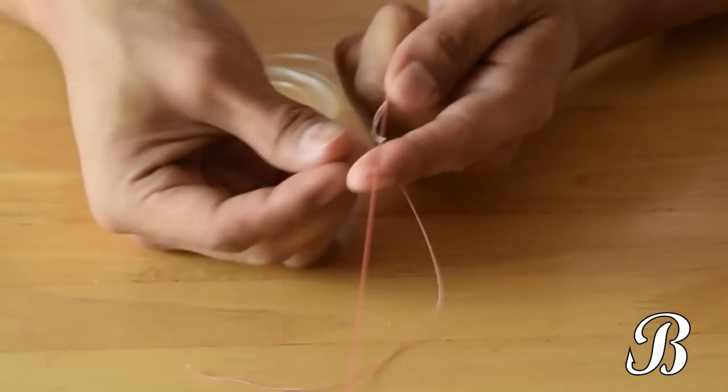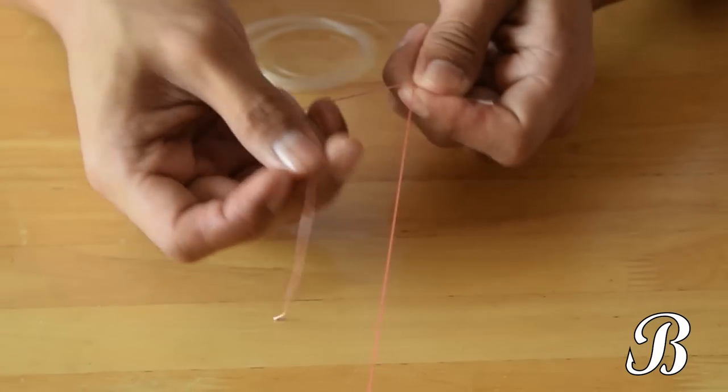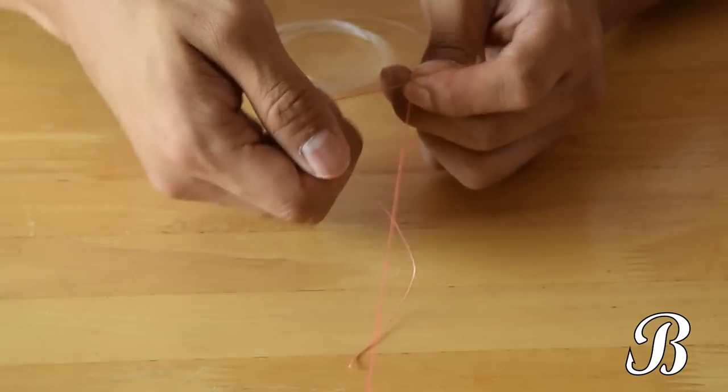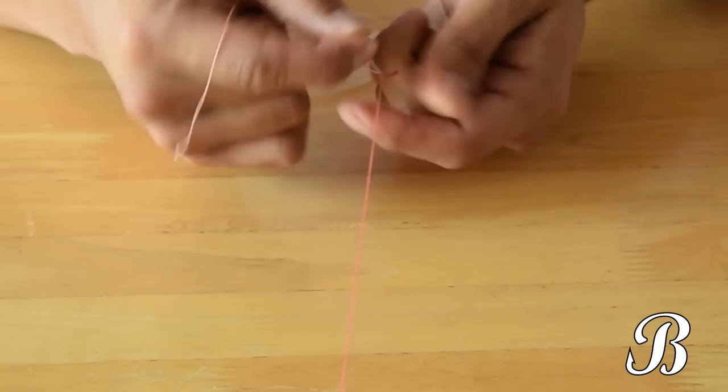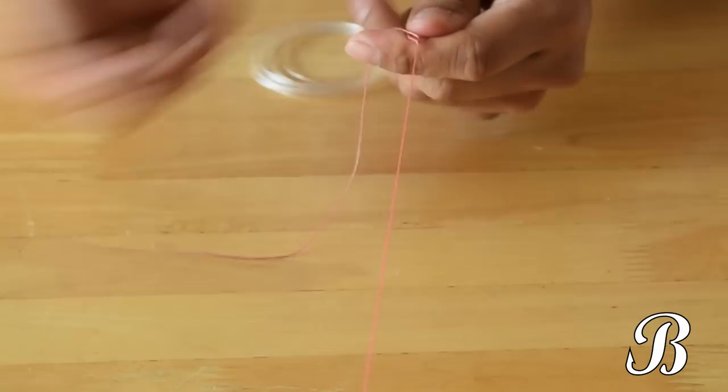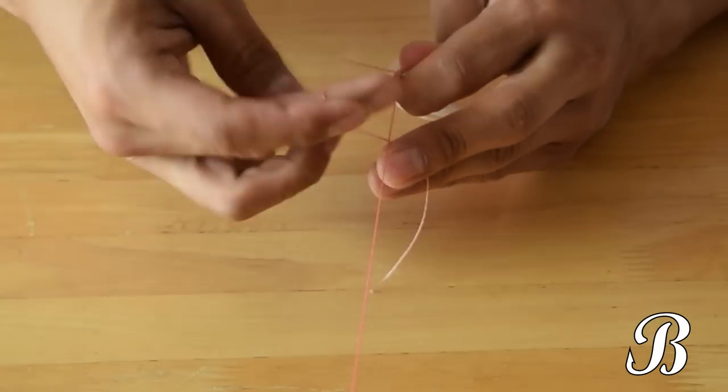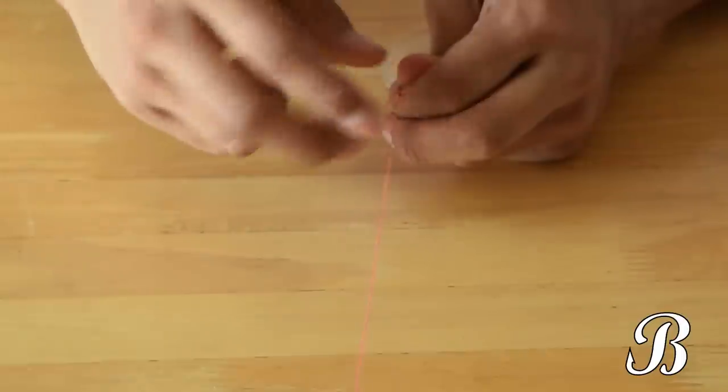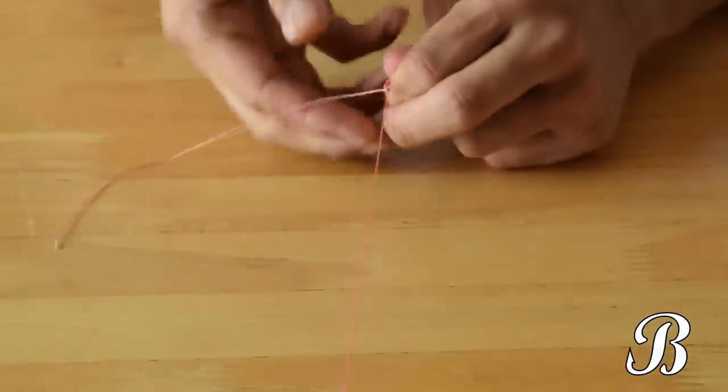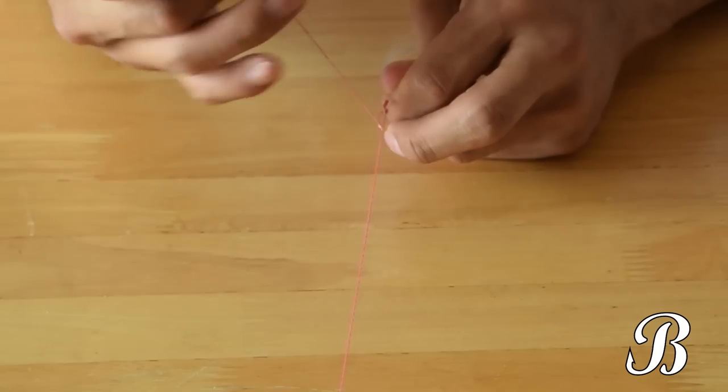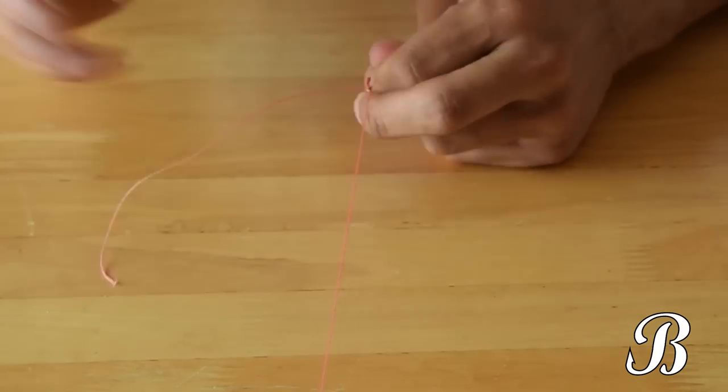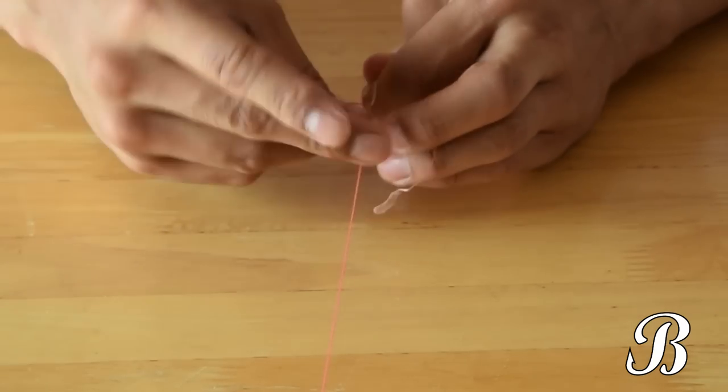And after that, we're going to tie some half hitches onto just the main line to prevent the line from coming out. So this time, the half hitch goes over only the braided line. So here we go. Half hitch at the bottom. Half hitch above. Pull her tight.